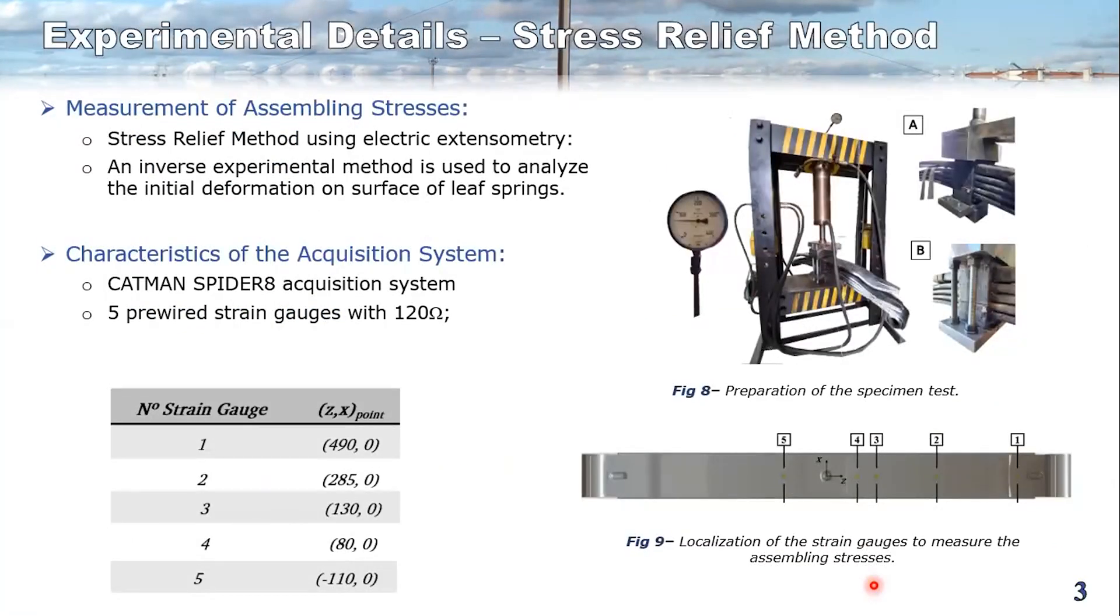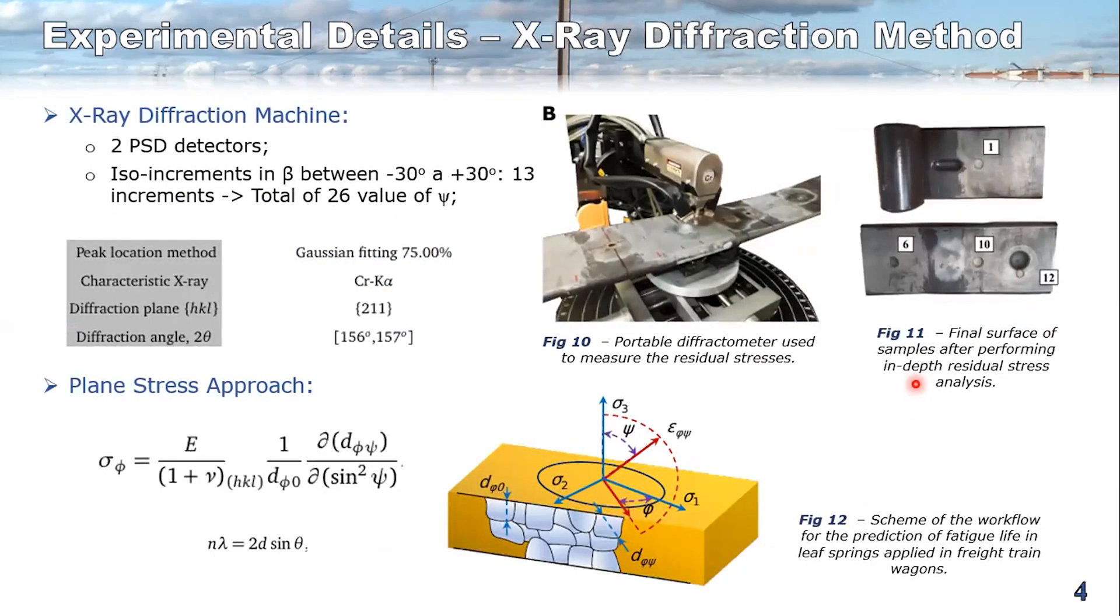And how can we determine this kind of stresses? For assembling stresses, we can use, as I called, stress relief methods. In this kind of method, we need to use strain gauges to collect the deformation on the surface while the leaf spring is relieving. We can see here that the spring buckle is cut previously to the test.